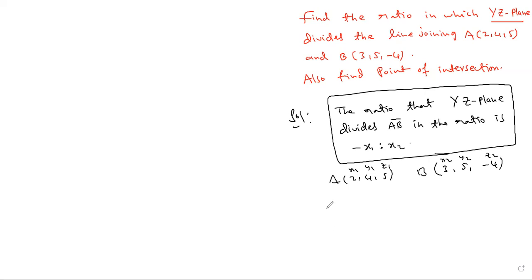First the ratio calculated. The ratio in which YZ plane divides line joining AB is minus X1 is to X2 which is equal to minus 2 is to 3. X1 is 2, X2 is 3, ratio is minus 2 is to 3.